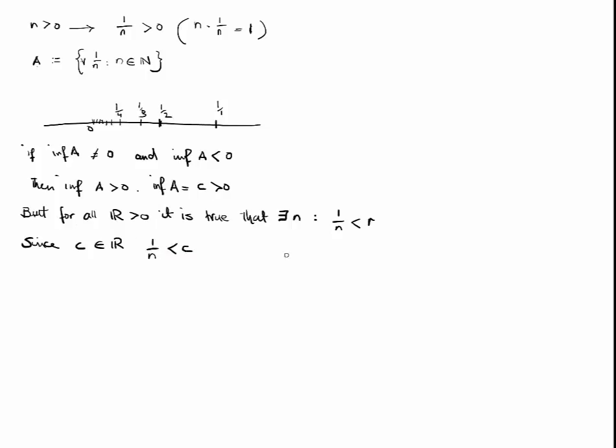Therefore, by contradiction, we have to accept that the infimum of A cannot be greater than 0. We already know that the infimum of A cannot be less than 0. Therefore, that leaves us with just this one possibility that the infimum of A equals 0.